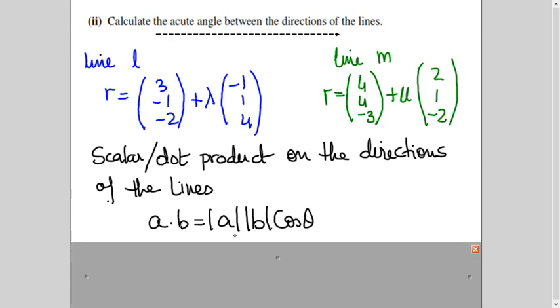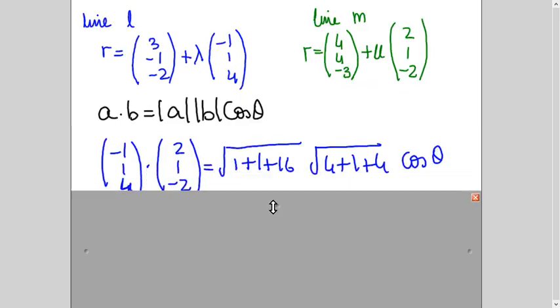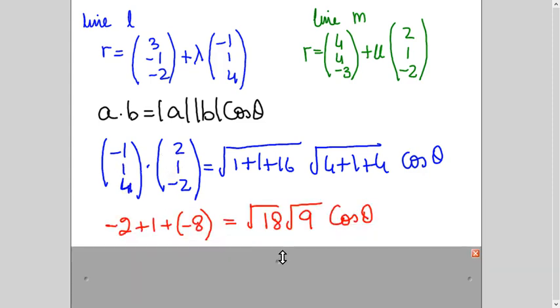A dot B equals magnitude of A, magnitude of B cos θ. So now I will substitute this in place of here and this in place of here. And then I will simplify it. Magnitude of A means its size. And you know how do we do it? This is square plus this is square plus this is square. Similarly, for magnitude of B, 2² + 1² + (-2)². So I got this. And you know how to solve it. This into this plus this into this plus this into this. So I have done this for you here.